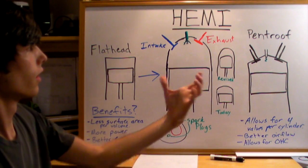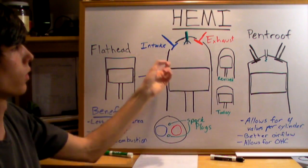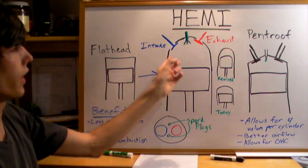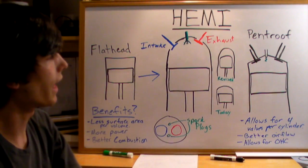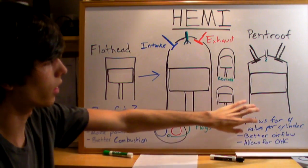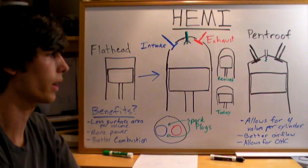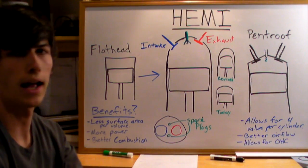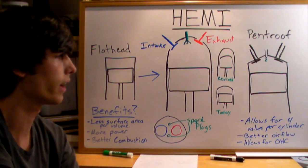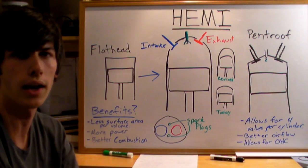That's the basics of a Hemi engine — it just means a hemispherical cylinder head. Pretty much what you're going to want is a pent roof design. They're more efficient, have better airflow, and they allow for four valves per cylinder and overhead cams.